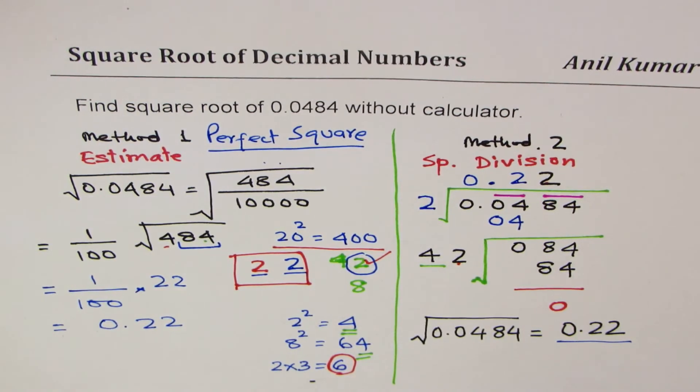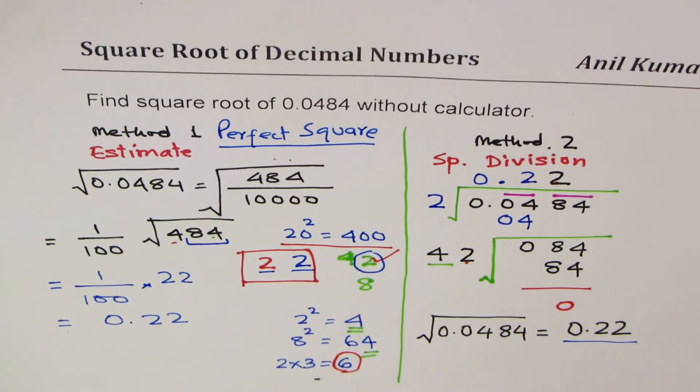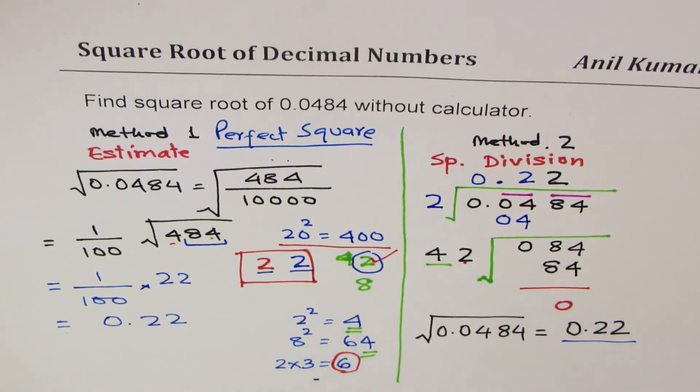22 divided by 100 is indeed 0.22, so we get the same answer. That is how you could find square root of a number without using calculator and not wasting much time.